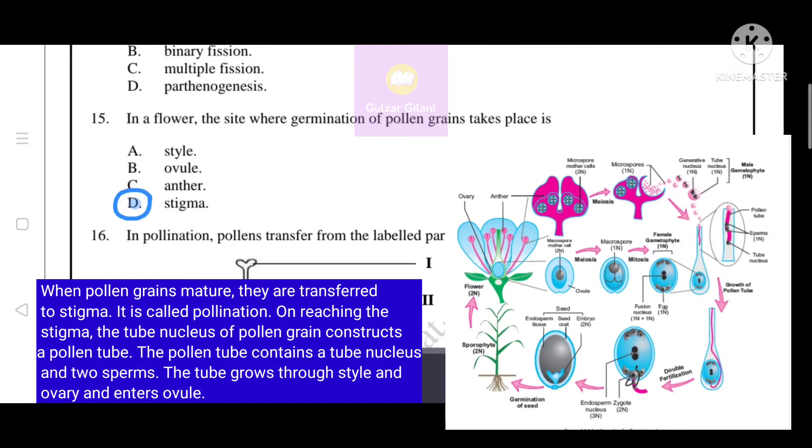As you know, when pollen grains mature, they are transferred to stigma. It is called pollination. On reaching the stigma, the tube nucleus of the pollen grain constructs a pollen tube. The pollen tube contains a tube nucleus and two sperms. The tube grows through style and ovary and enters ovule. That's why the correct answer is D, stigma.